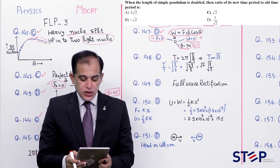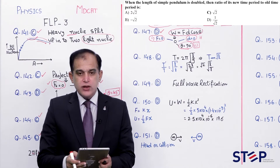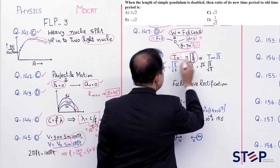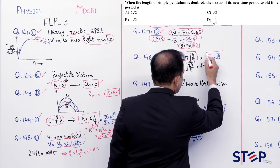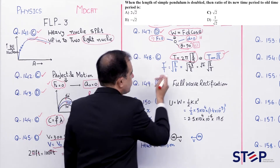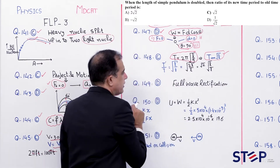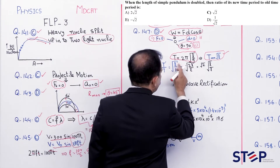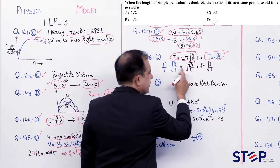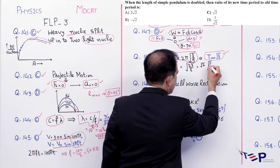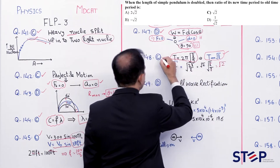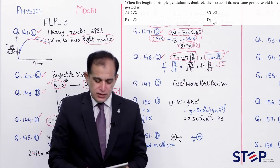Question number 148: When the length of a simple pendulum is doubled, ratio of new time period to old. T = 2π√(l/g), so T is proportional to √l. T'/T = √(2l/l) = √2. Correct option: Charlie.